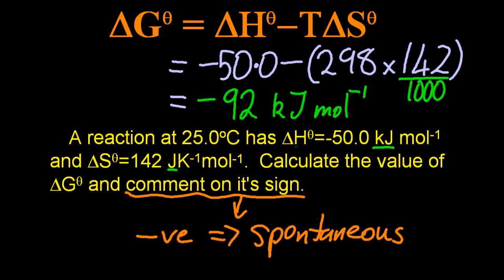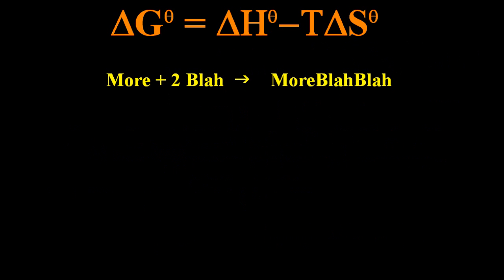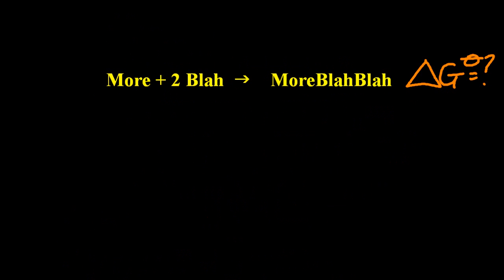OK, the second way to work out delta G is, well, if I had the products and reactants value for delta G, I can just do that whole products minus reactants business. So I'll just look them up in my personal data booklet. That's X, and that's Y.